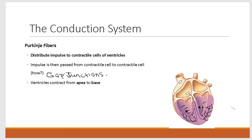Because the stimulus to contract was passed to the ventricles at the apex first, the ventricles contract in a wave-like fashion from the bottom up toward the top. This is important because the large vessels leading out of the heart — the pulmonary trunk from the right ventricle and the aorta from the left ventricle — are located at the top. Contracting from the bottom upward pushes blood up and out toward those vessels so it can be ejected from the heart.